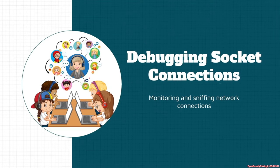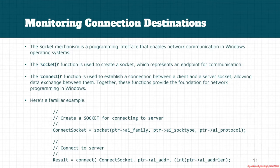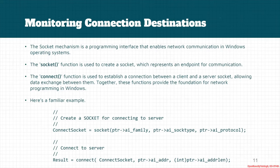Now let's see the scenario in which we debug socket connections in Windows. A socket connection is a mechanism that provides facilities to communicate over a network via TCP or UDP. There is a famous function called socket(), used to create a socket endpoint, and another called connect(), responsible for establishing a connection between a client and a server, enabling data exchange.